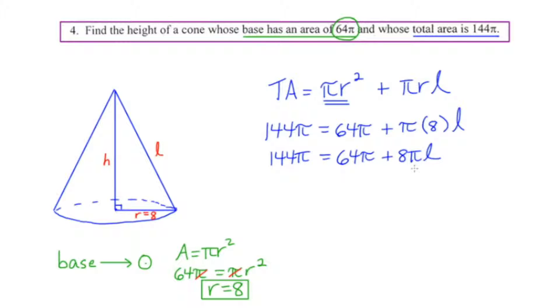144π equals 64π plus 8πL. Let's start by subtracting 64π from both sides. Now 144π minus 64π is 80π. These are going to just cancel out, so now we're left with 80π equals 8πL. Now I'm going to divide both sides by 8π. The 8's cancel, the π's cancel. So we're left with 80π over 8, which is really 10. 10 equals L.